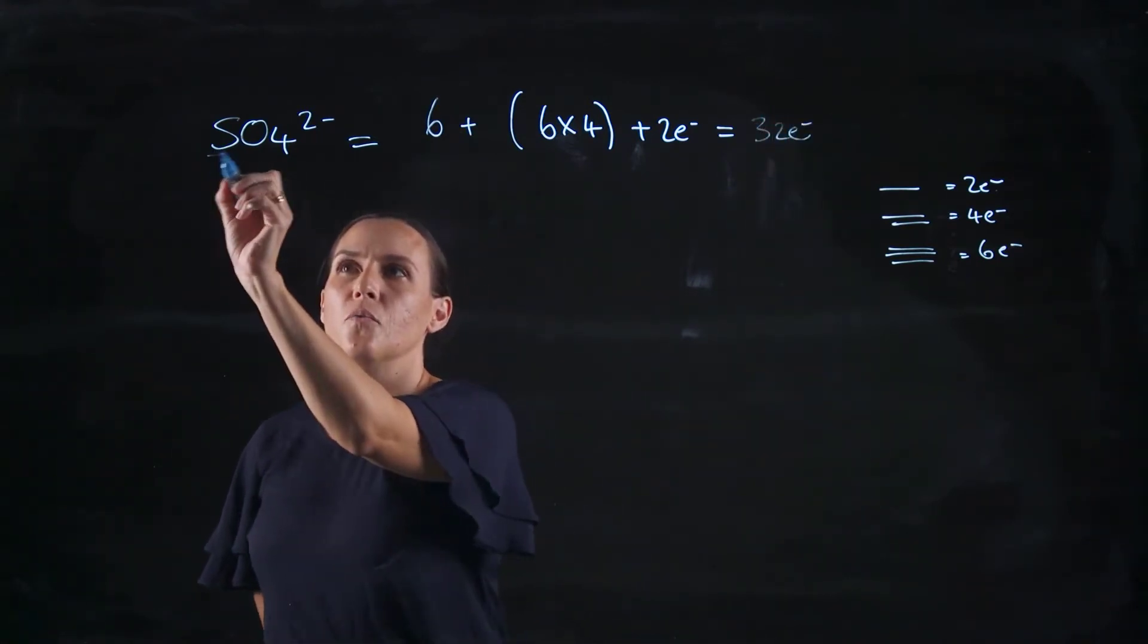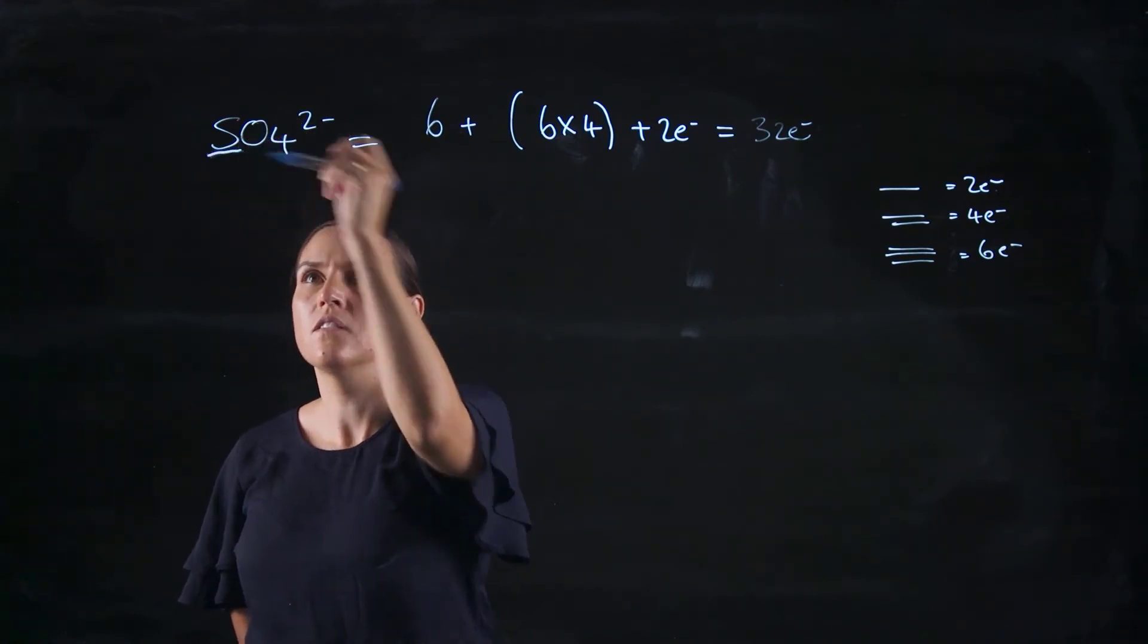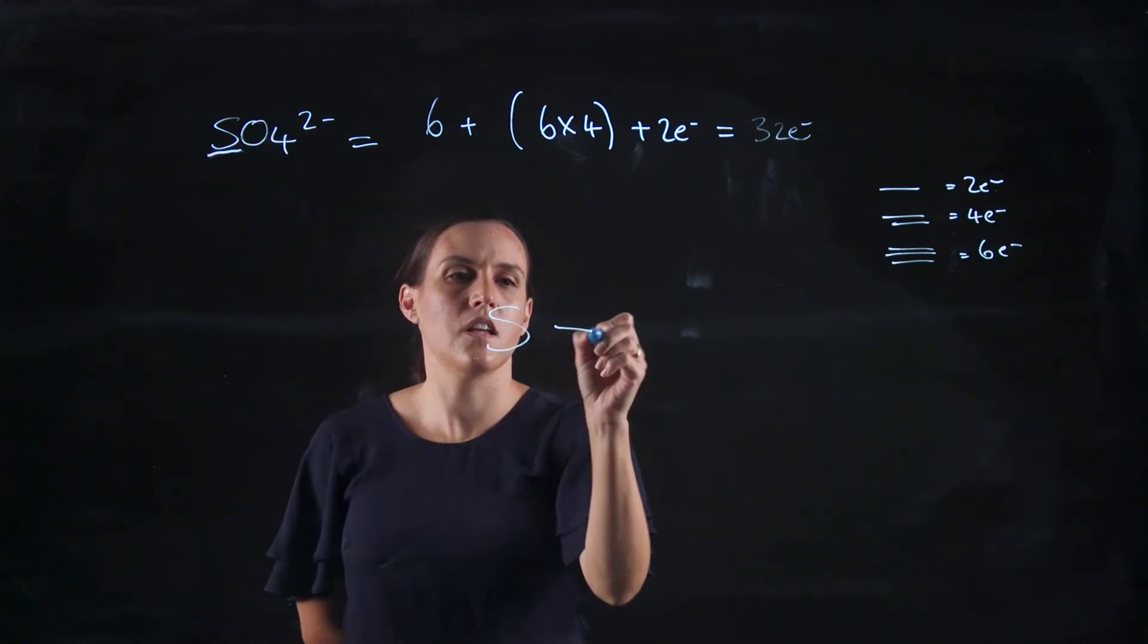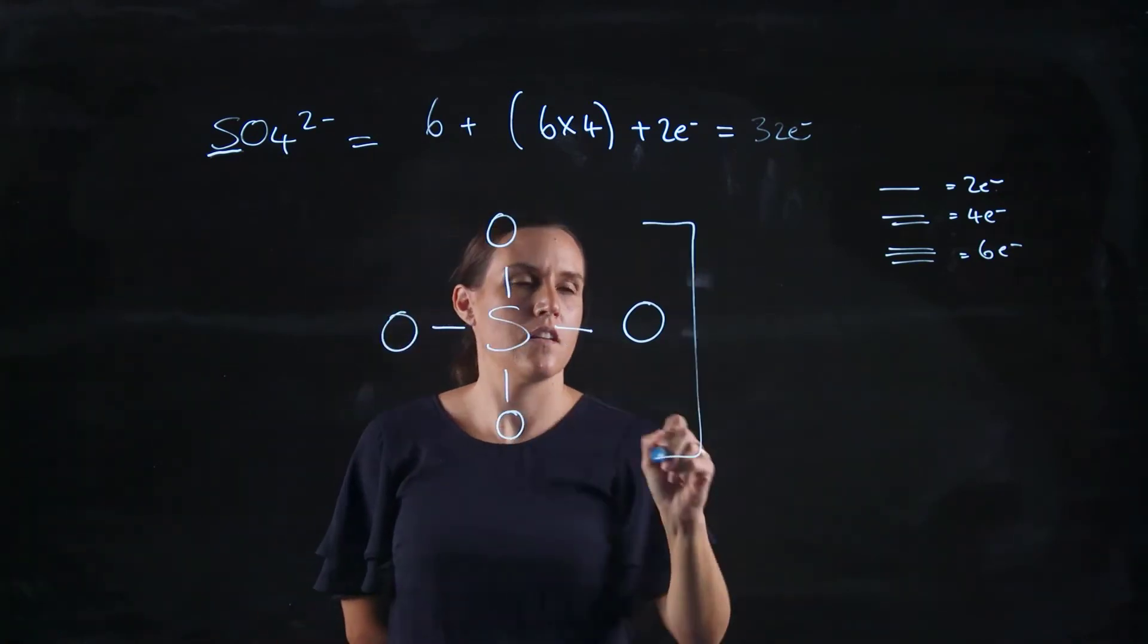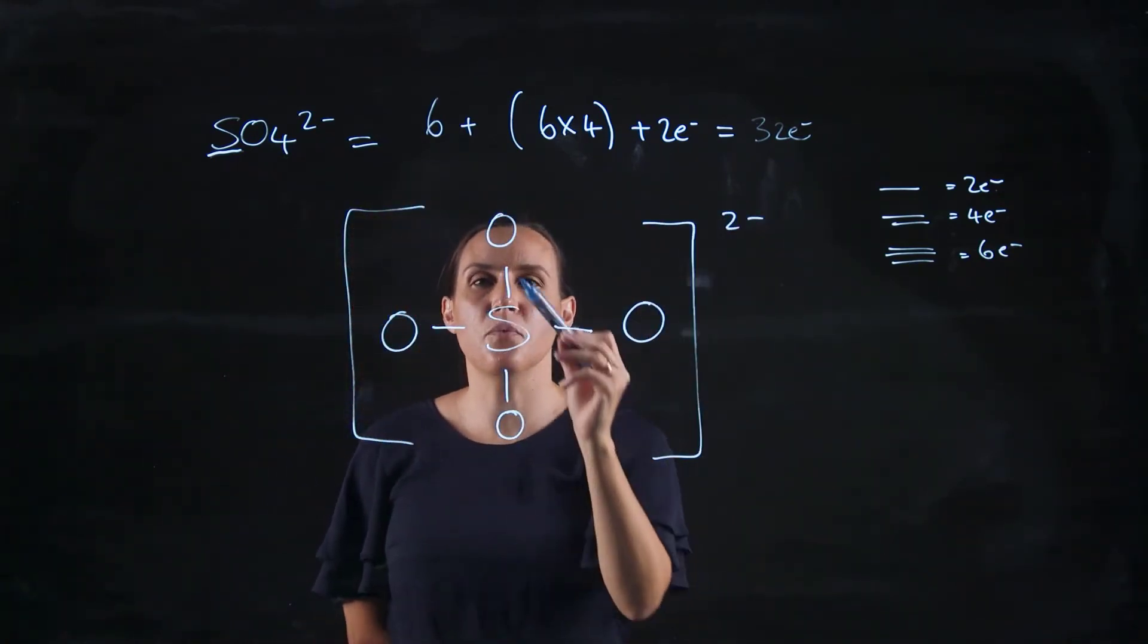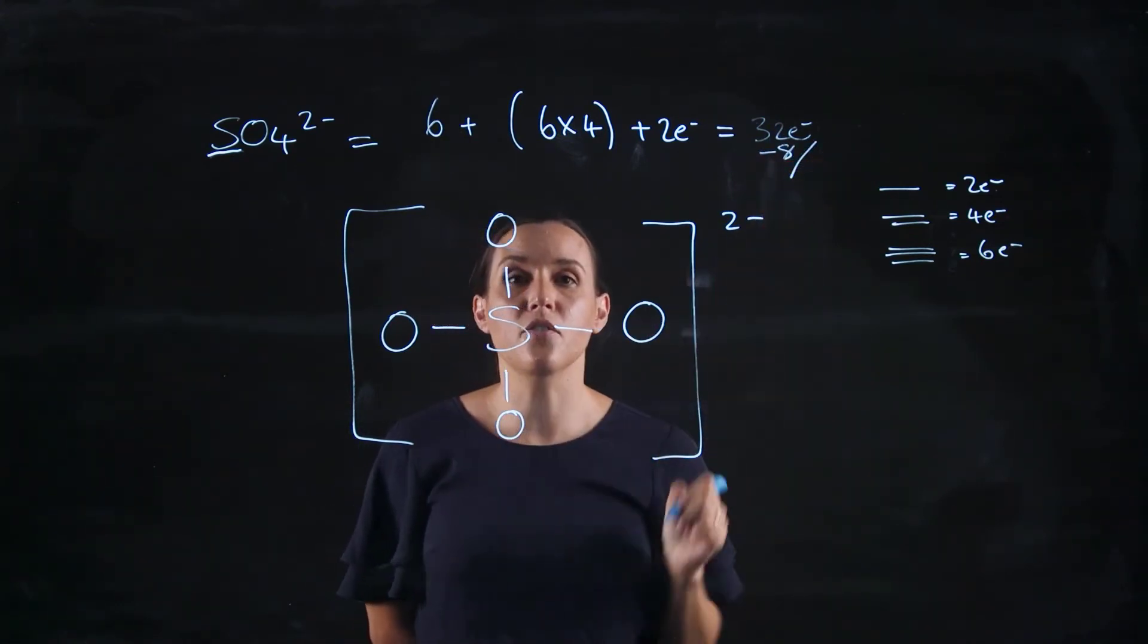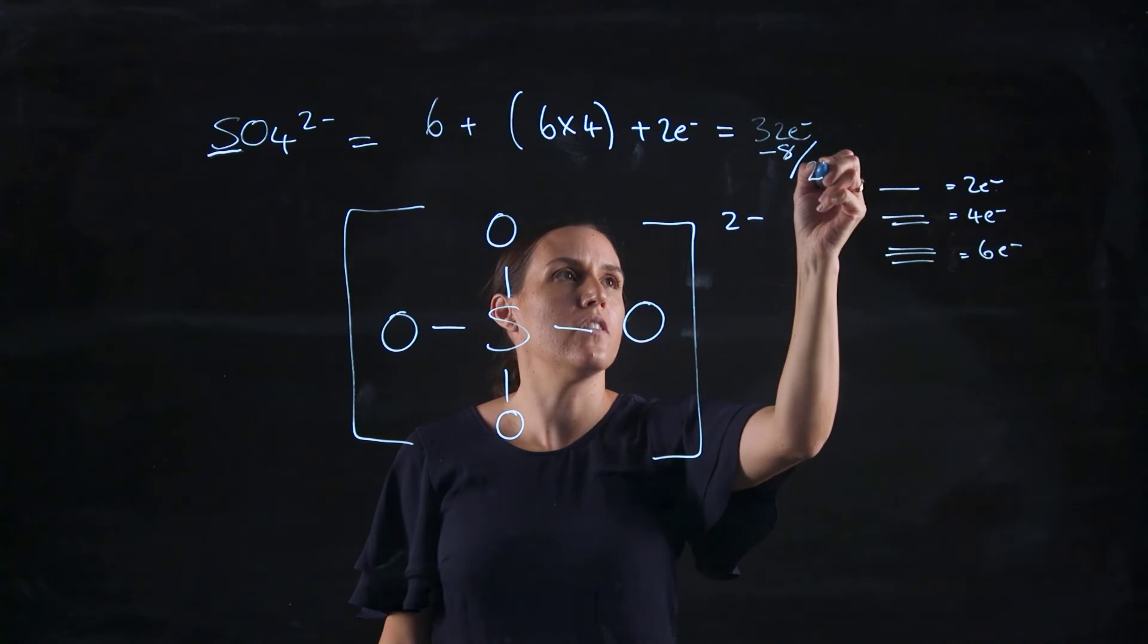So starting off with sulphur, which is our central one, and putting in our four oxygens. And then we've got a two minus overall. So in doing this, I put in 2, 4, 6, 8. Subtract that from my total. It's going to be 24 electrons.